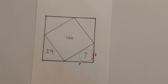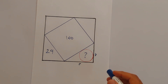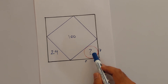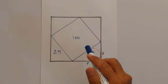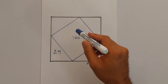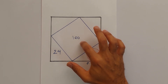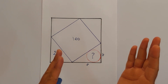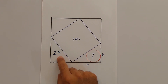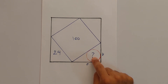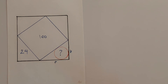Here is a nice-looking geometric problem. We have a big square with another square inscribed inside it in a tilted way, with an area of 100 square units. We also have a right triangle with an area of 24 square units. So what is the area of the inscribed circle inside this triangle?